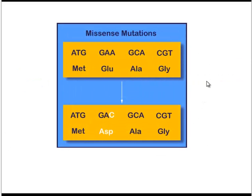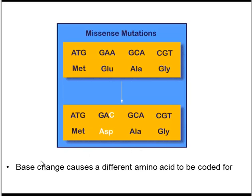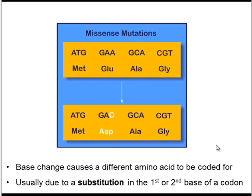For example, some point mutations result in missense mutations. Here's the original DNA sequence and the original amino acid sequence that it codes for. What's happened is that one base in the codon has been substituted — an A for a C. This results in a different amino acid being coded for, because GAA coded for glutamate, whereas GAC codes for aspartate. Because there's a different amino acid, this is a missense mutation. This is usually due to a substitution in the first or second base of a codon, because those are the two bases that typically determine the amino acid.